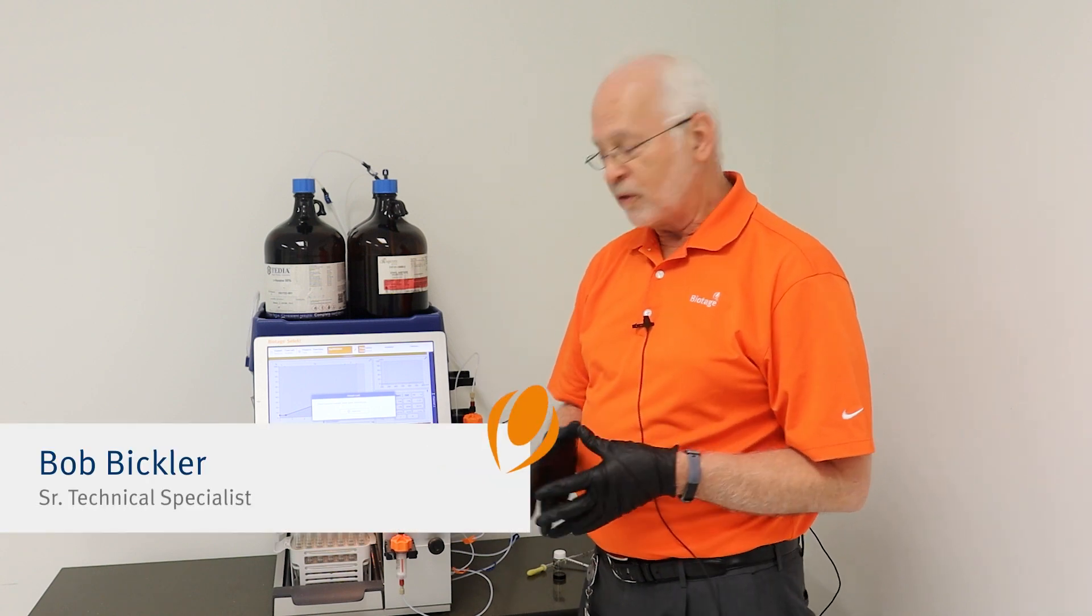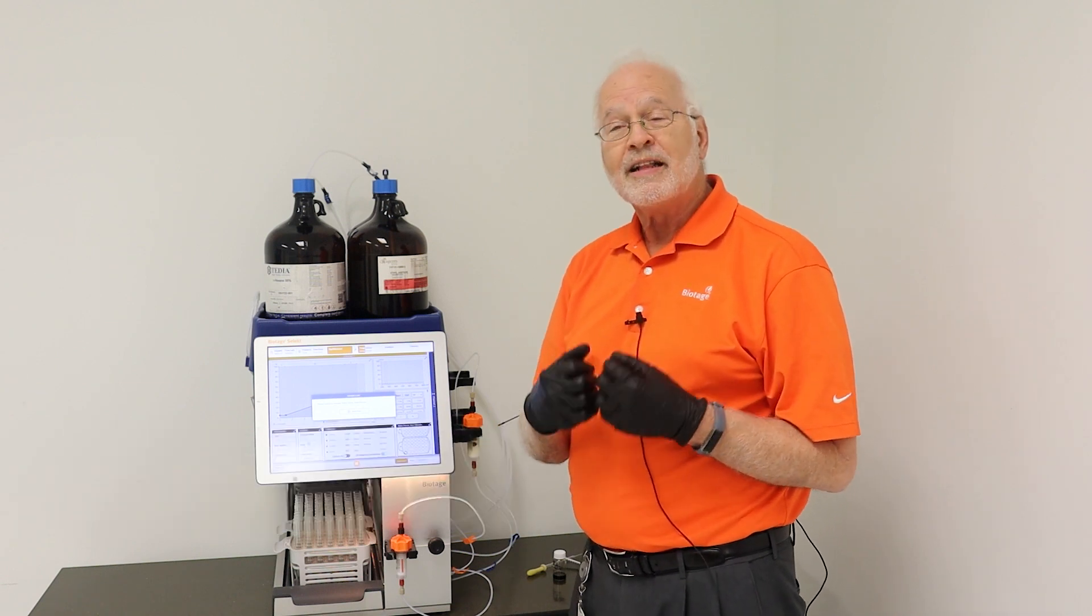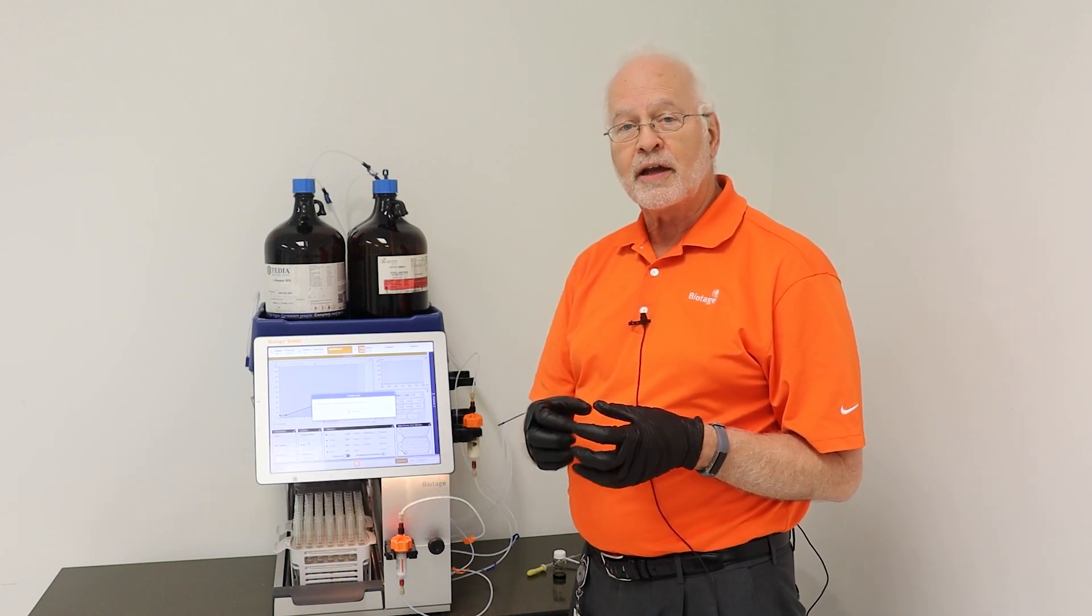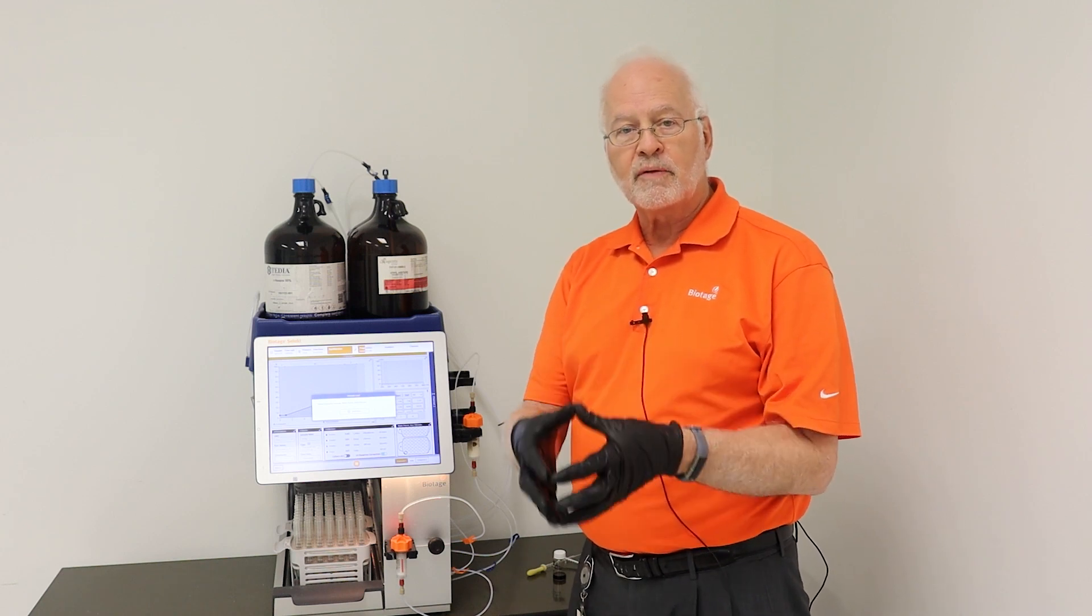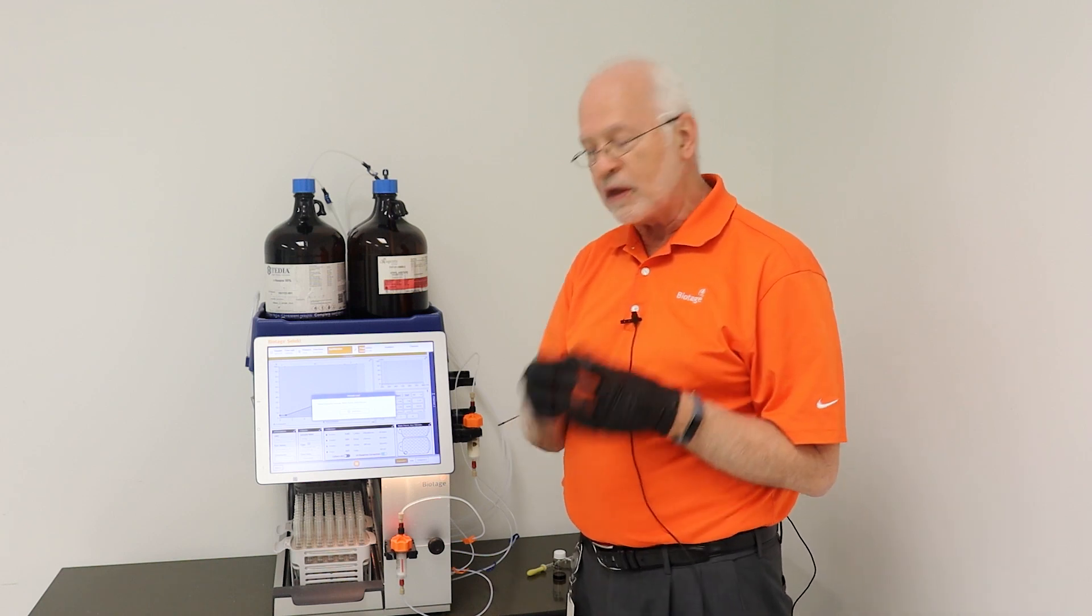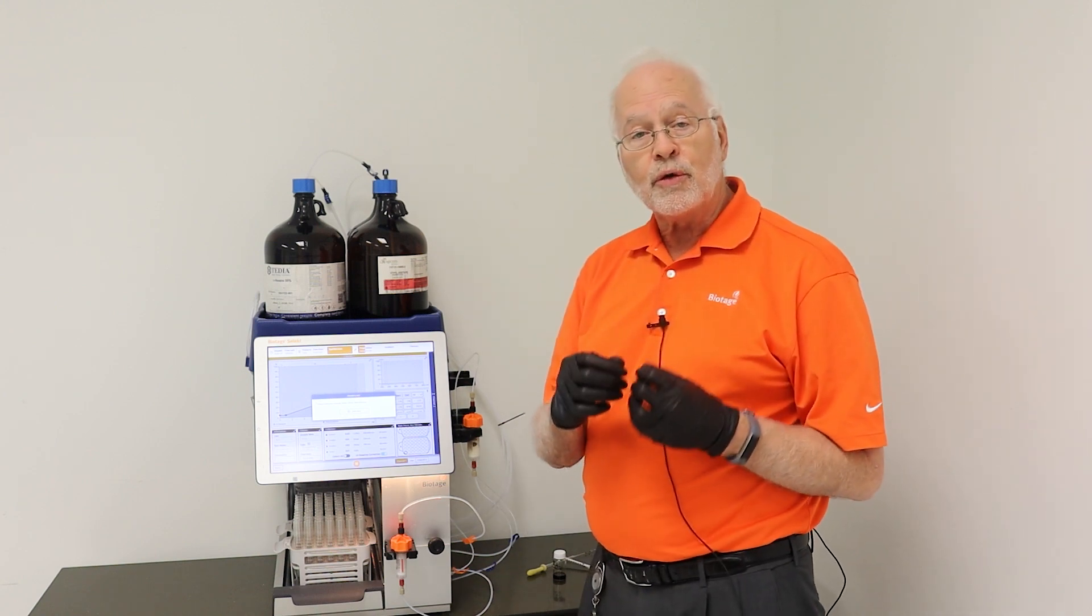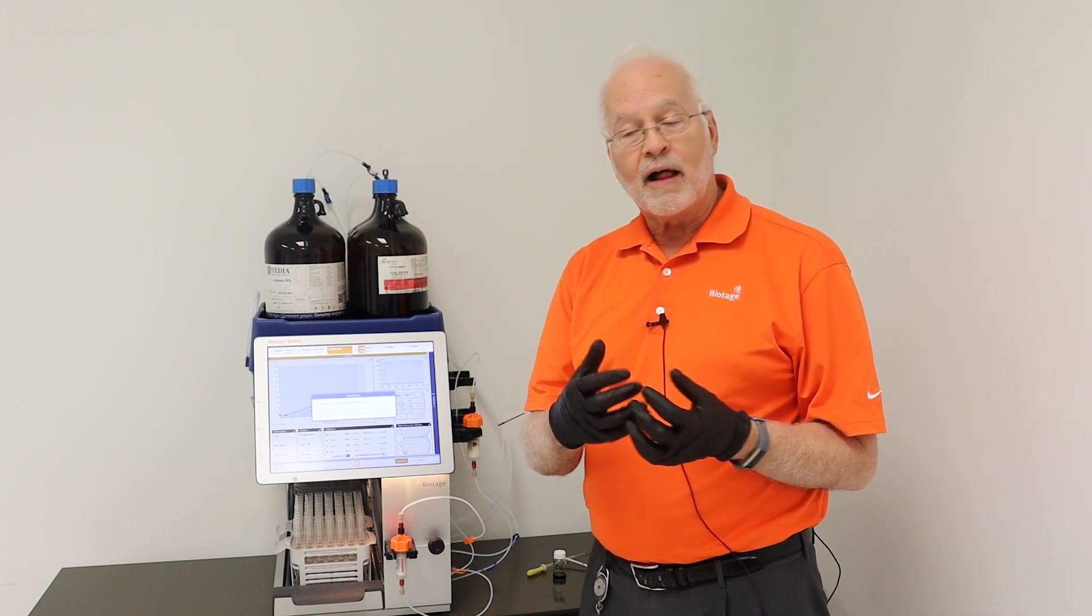Sample loading using a liquid. The third option for injecting your sample if they tend to be on the viscous side or you expect that the sample may not fully soak into the column is to use an injection valve.